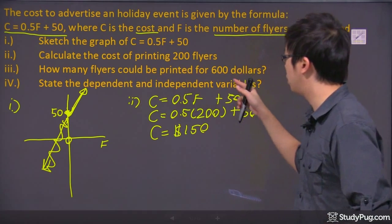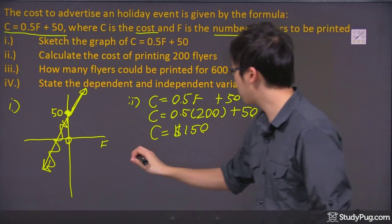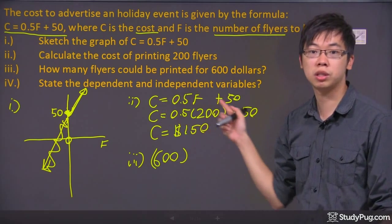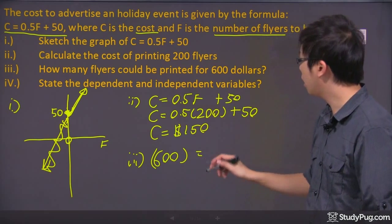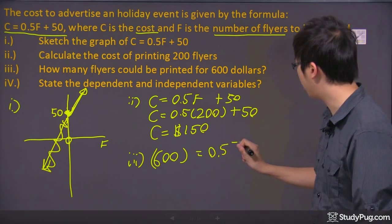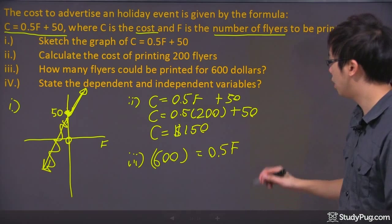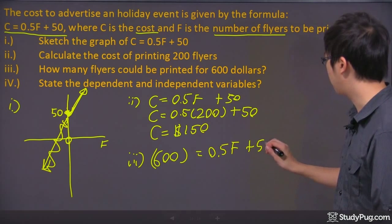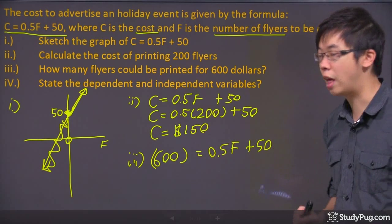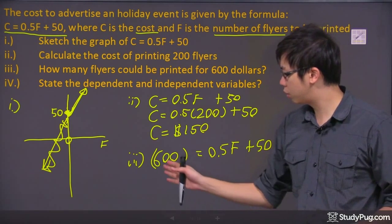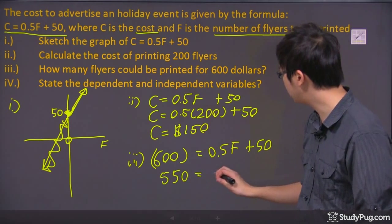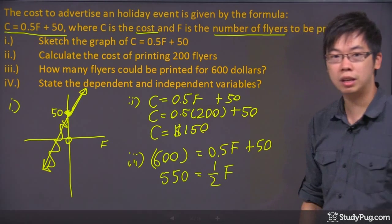Now, how many flyers could be printed for $600? Well, what that means is you know you're already spending $600 on the cost side. I'm using the same formula up here. And we're trying to figure out how many flyers. So we're going to keep the 0.5F as it is in the equation. And we're going to add $50 to that because that's part of the equation as well. So your job is to figure out the F, which is the number of flyers that you're going to print. So we're going to move the 50 over here. So we've got 550 because you're subtracting 50 from both sides. And I'm going to change the fraction so it looks somewhat easier.